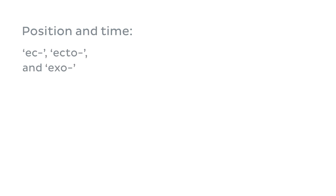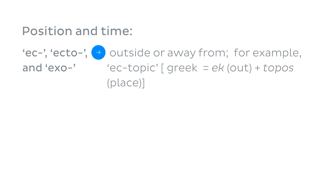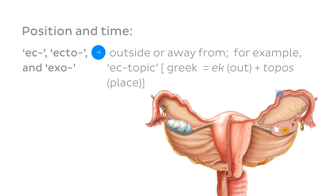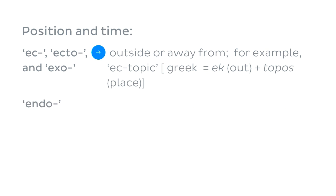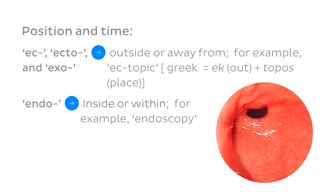Next up are the prefixes 'ec,' 'ecto,' or 'exo,' all of which suggest a position outside of or away from something. Examples include ectopic — from the Greek 'ek' meaning out and 'topos' meaning place, literally 'out of place' — such as an ectopic pregnancy where implantation occurs outside the uterus. The opposite is 'endo,' meaning inside or within; an endoscopy is a procedure in which a camera is placed inside the body for exploratory, diagnostic, or surgical purposes.